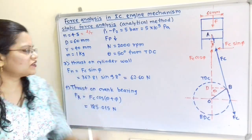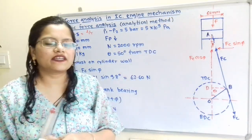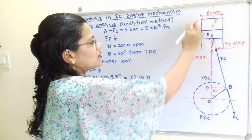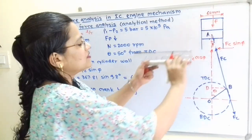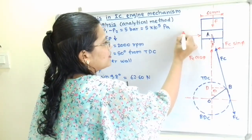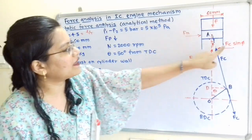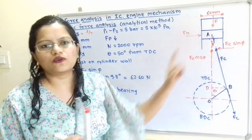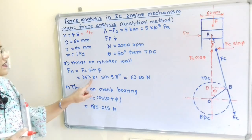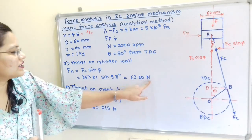Next question: thrust on cylinder wall. The cylinder wall thrust is always perpendicular to the direction of motion, so it acts in the horizontal direction. This thrust Fn and Fc sin φ are opposite to each other, so Fn = Fc sin φ = 367.81 × sin 9.8° = 62.60 N.